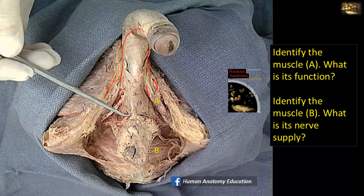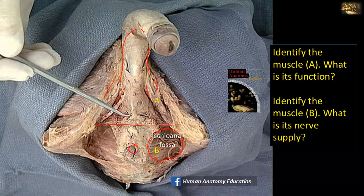Muscle B lies in the anal triangle. You can see here is the anus. The imaginary line between the two ischial tuberosities divides the perineum into a urogenital triangle anteriorly and an anal triangle posteriorly. On the sides of the anal triangle is the ischioanal fossa. The fossa is bounded laterally by the obturator internus muscle fibers.